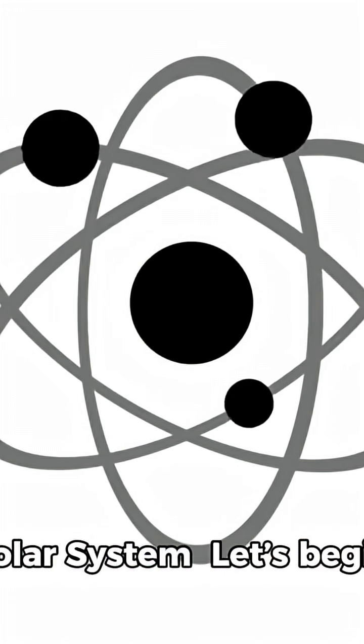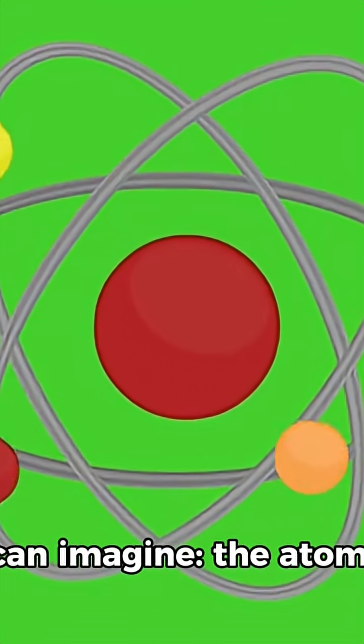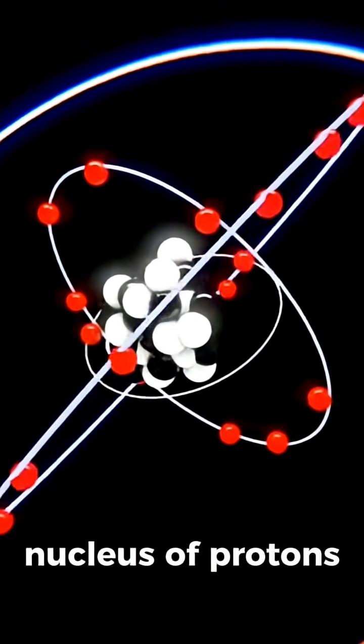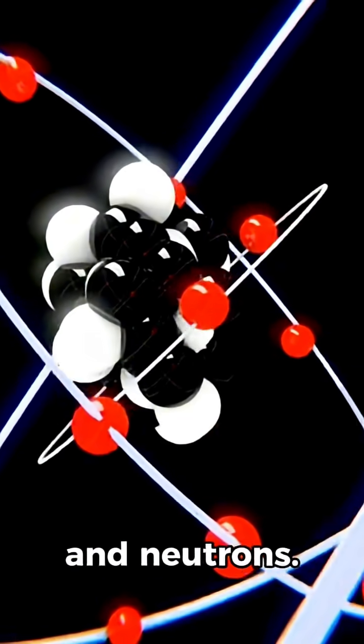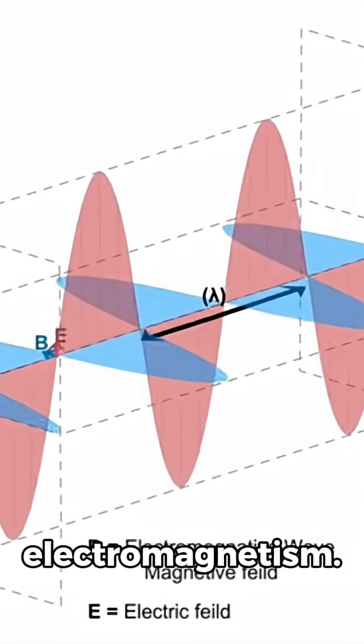Part 1. The Atom and the Solar System. Let's begin in the smallest world we can imagine, the atom. Inside every atom, electrons orbit a nucleus of protons and neutrons. Their motion is governed by invisible forces of electromagnetism.